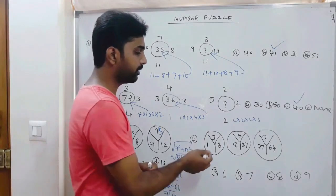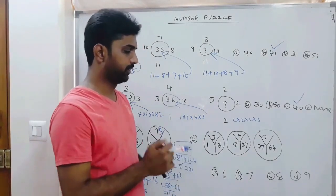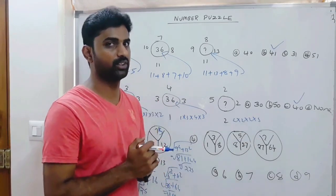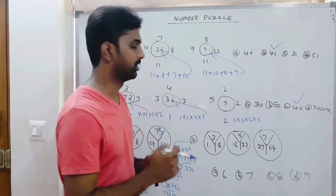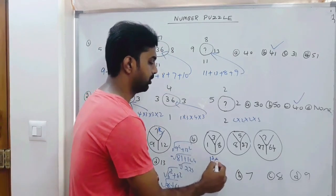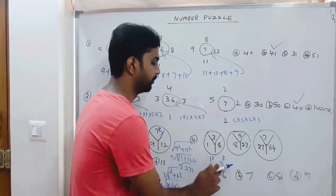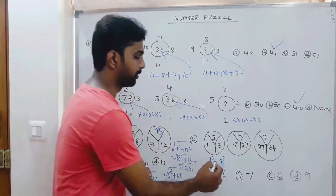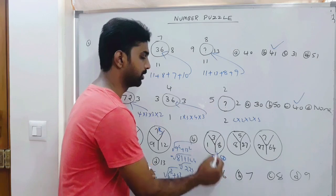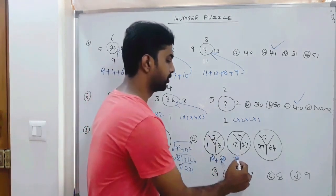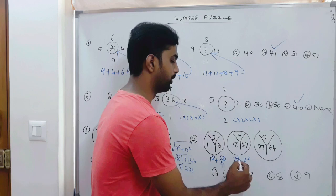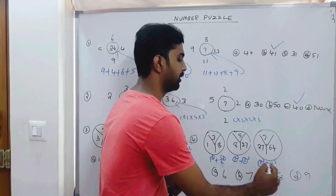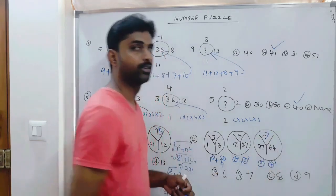Let us see another one. If you see the numbers here — 1, 8, 27, 64 — these are all cube groups. This is 1 cubed, 2 cubed, 3 cubed, 4 cubed. So 1 cubed and 2 cubed: 1 plus 2 is 3. Then 2 cubed and 3 cubed: 2 plus 3 is 5. Then 3 cubed and 4 cubed: 3 plus 4 is 7.